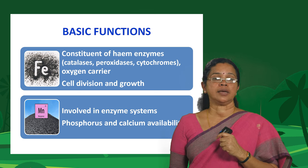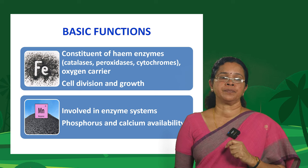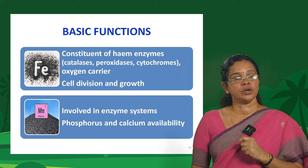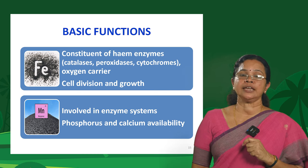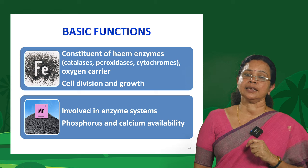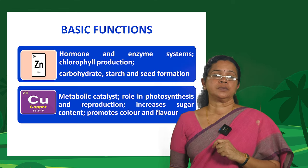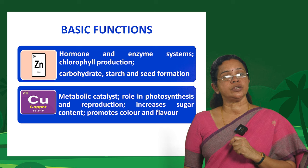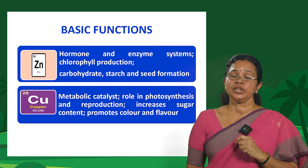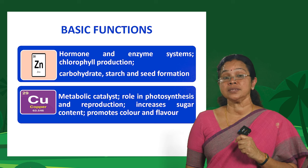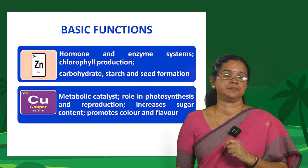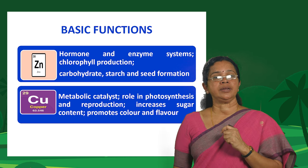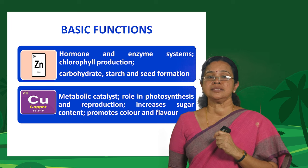Manganese is another metal that functions as a micronutrient. It is involved in enzyme systems and also regulates the availability of phosphorus and calcium. Zinc is involved in hormone and enzyme systems and in chlorophyll production. Specifically, it is involved in auxin metabolism and regulates the functioning of auxins. Zinc also has a role in carbohydrate and starch metabolism as well as in seed formation.